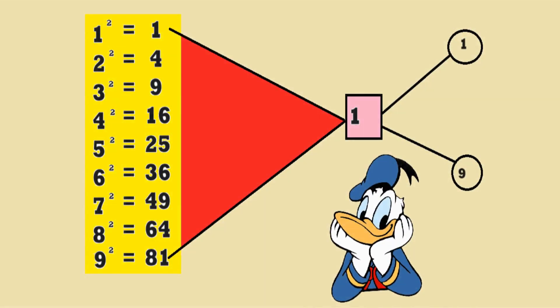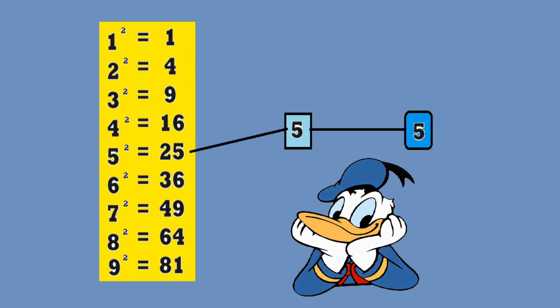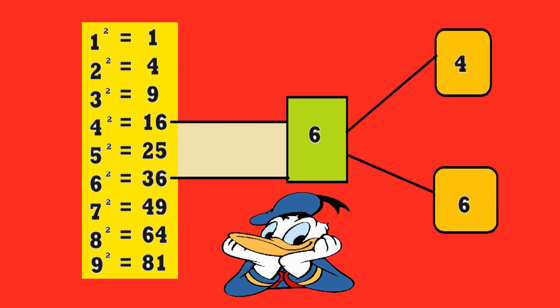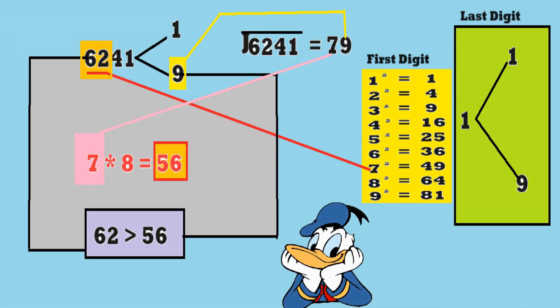If the last digit of a number is 1, the last digit of its square root will be 1 or 9, because the squares of 1 and 9 end with 1. Similarly, if the number ends with 4, the last digit of the square root will be 2 or 8. If it ends with 5, the square root ends with 5. For 6, the last digit will be 4 or 6. For 9, it will be 3 or 7.